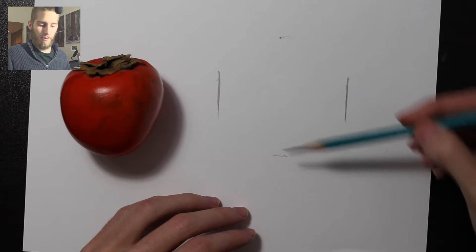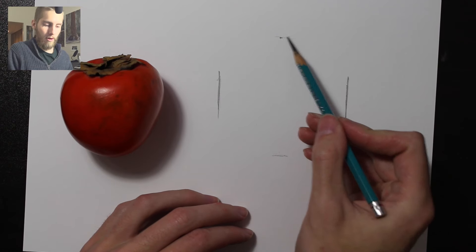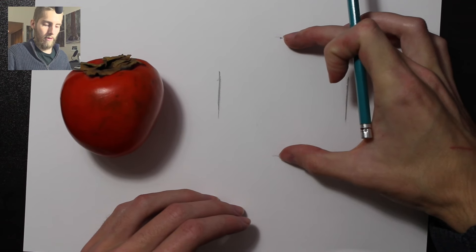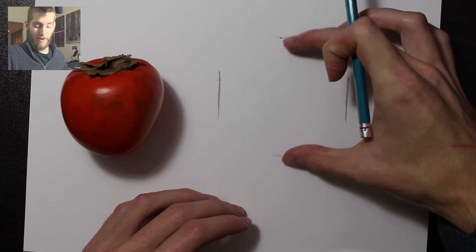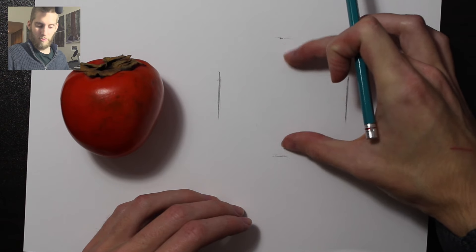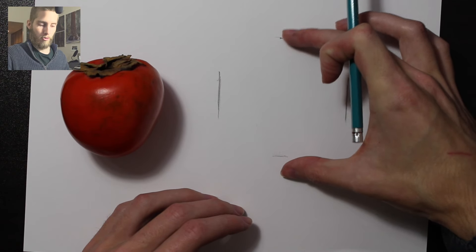So now when I draw this object, I know it's going to be taller than these guide marks that I put down. I know it's not going to be any smaller than that because then it will be out of proportion.